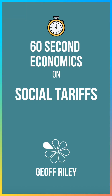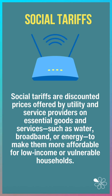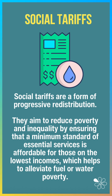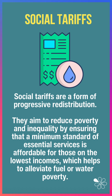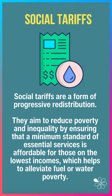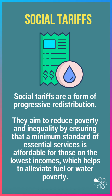60-second economics on social tariffs. Social tariffs are discounted prices offered by utility and service providers on things like water, broadband, or energy to make them more affordable for lower income or vulnerable households. They're basically a form of progressive redistribution and price discrimination. The aim is to reduce poverty and inequality by ensuring that a minimum standard of essential services is affordable for those on the lowest incomes, helping address things like fuel or water poverty.